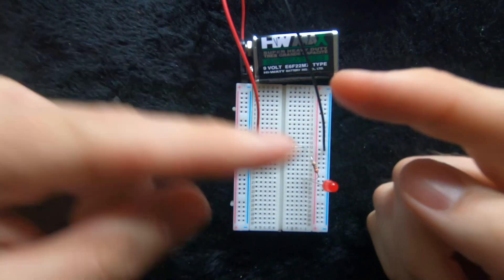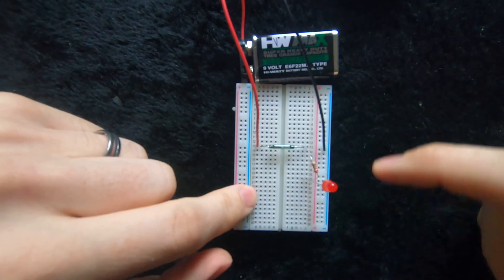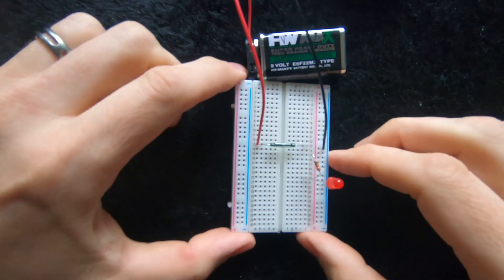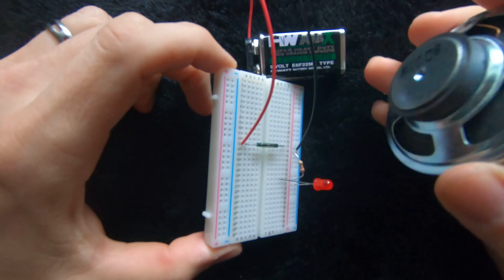If I put a magnet near this, it draws them together, throwing the switch which allows the current to flow through the LED. Now I couldn't find a magnet but I do have a speaker, and a speaker does have a magnet on the back of it.